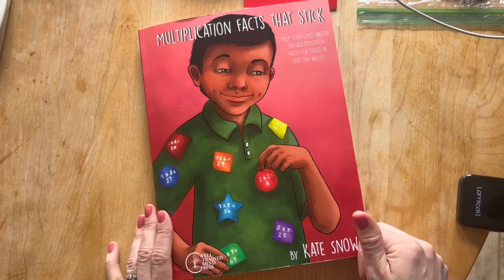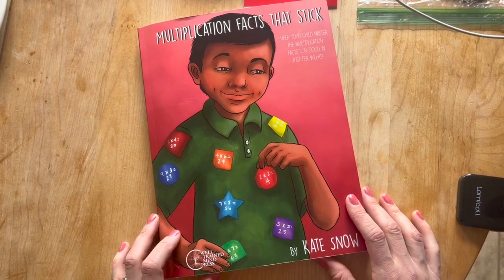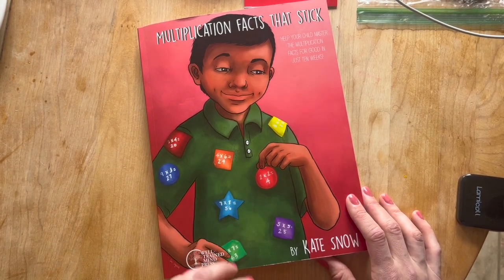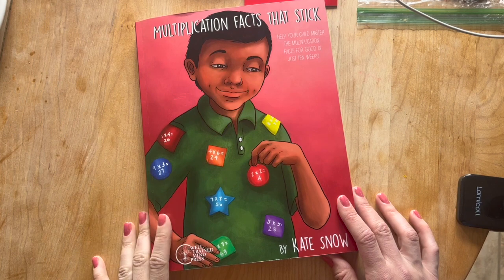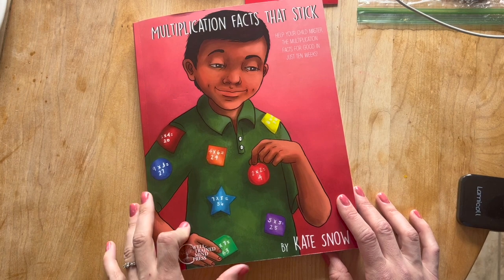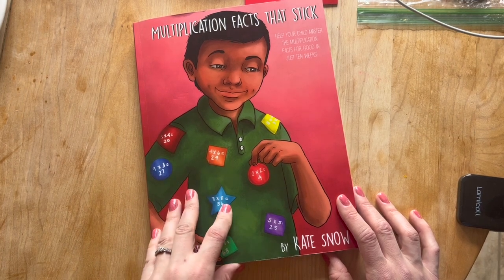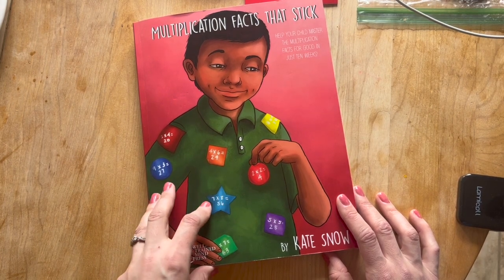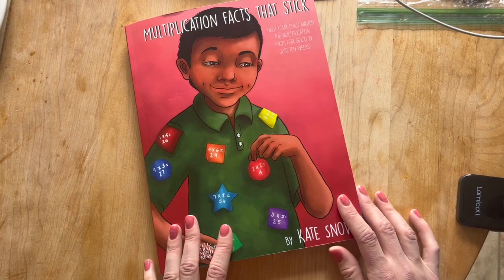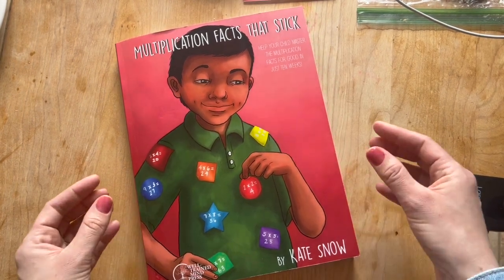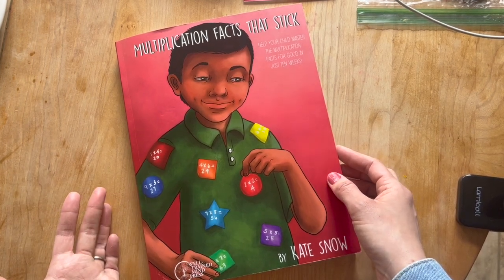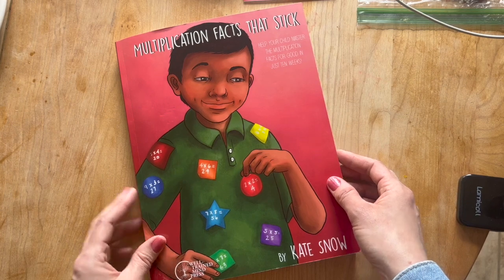Please give a thumbs up if you liked it and I will leave the link for where you can buy multiplication facts that stick in the description. So you can buy this on Amazon. You can also find this at the Well-Trained Mind. The Well-Trained Mind is the only place that you can find the PDF version of this and they do run sales, 40% off sales several times throughout the year so check for that. And yeah, be sure to stick around. I will be doing a review video of just how this actually worked for us which you will probably not see for at least 10 weeks.